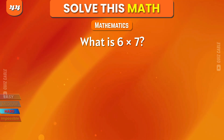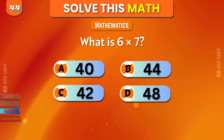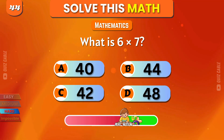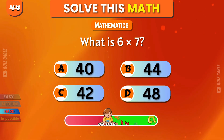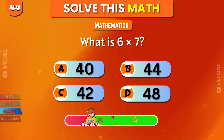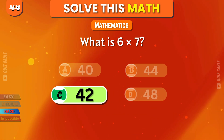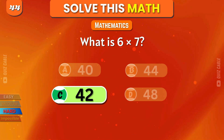What is 6 times 7? 40, 44, 42, 48. Correct, 42.